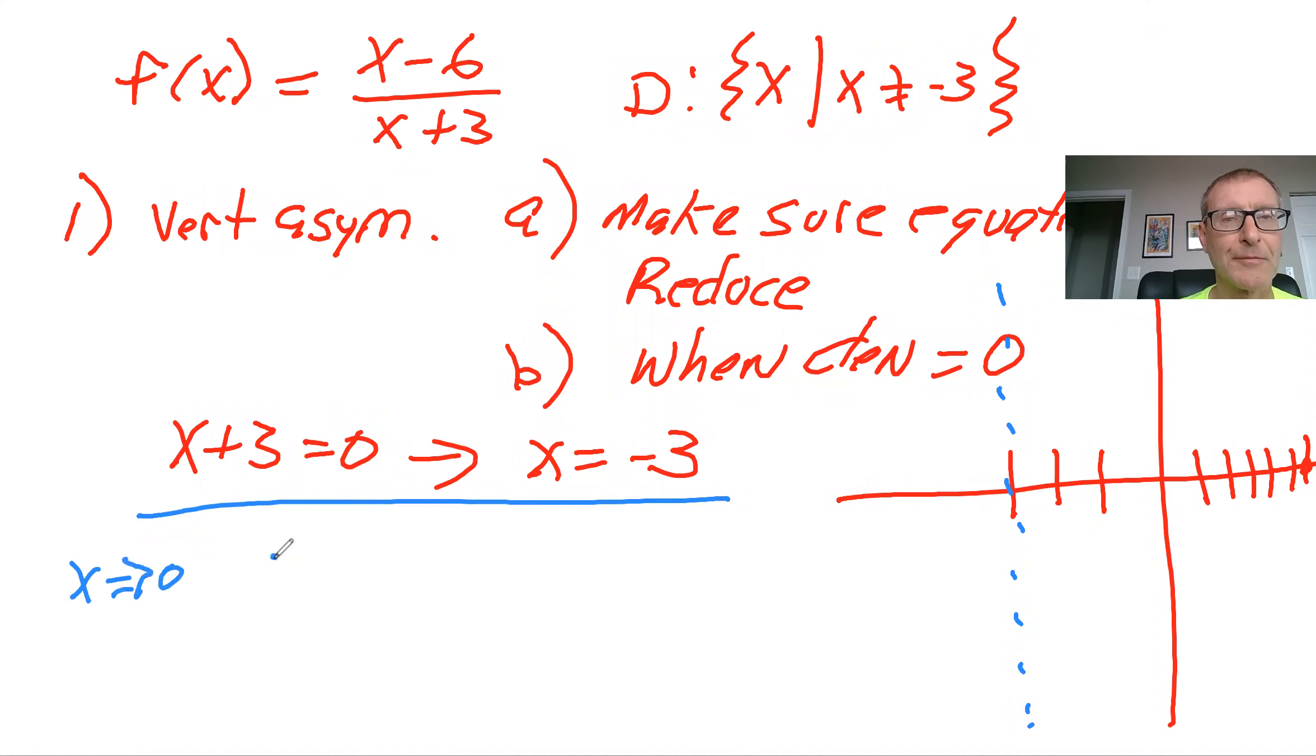So you have Y equals 0 minus 6 over 0 plus 3, so minus 6 over 3, and that would give us minus 2.